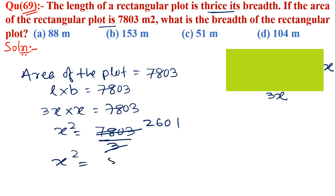2601 is the square of 51, so therefore x is equal to 51 meter, which is the required breadth. So option c is the correct answer.